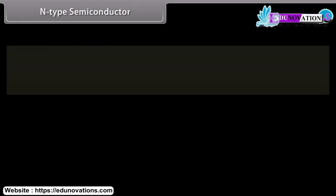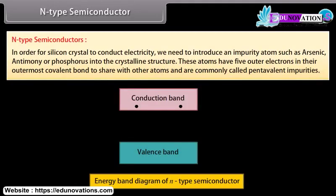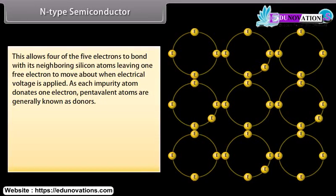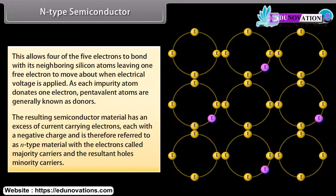In N-type semiconductors, an impurity atom such as arsenic, antimony, or phosphorus is introduced into the crystalline structure. These atoms have 5 outer electrons; 4 bond with neighboring silicon atoms, leaving one free electron to move when electrical voltage is applied. As each impurity atom donates one electron, pentavalent atoms are called donors. The resulting material has an excess of current-carrying electrons with negative charge — called majority carriers — while holes are the minority carriers.